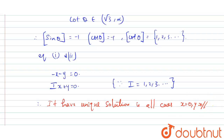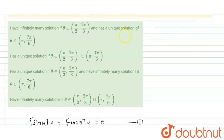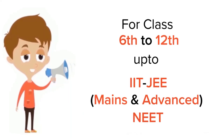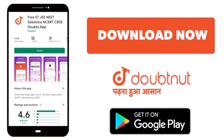So from this condition it has infinitely many solutions, and from the other condition it has a unique solution. Therefore option A is the correct answer. Thank you. For class 6 to 12, IIT-JEE and NEET level, trusted by more than 5 crore students — download DoubtNet today.